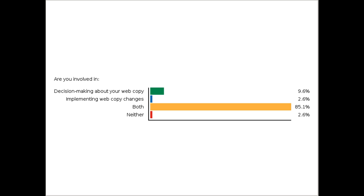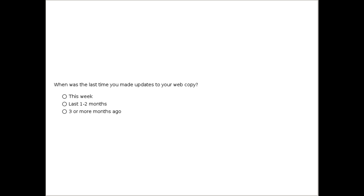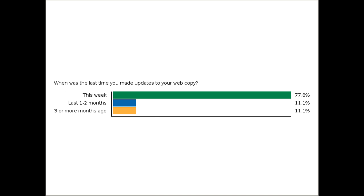Sure, I am happy to do that. Web copy — the word copy is really all about text. So whatever text appears on your website would be considered web copy. We also use the word content for it — web content — and usually content involves the text and the graphics or the photos. I am actually going to be talking about both today, but my emphasis is on the text or the writing, the copy part. It looked like in the prior poll question, nearly 90% of you are both decision maker and implementer of web copy changes.